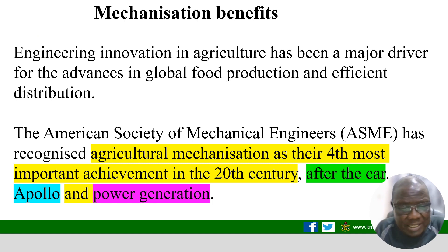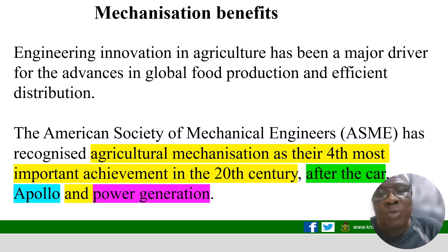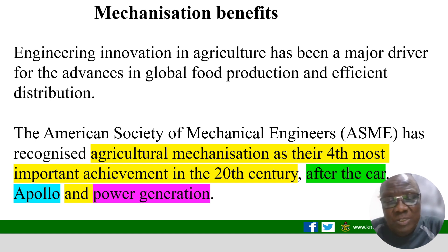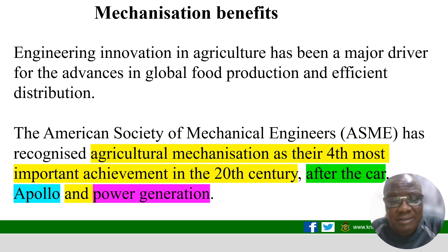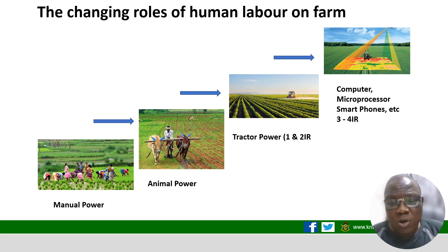The benefits of mechanization are detailed by the American Society for Mechanical Engineers. Engineering innovation in agriculture has been a major driver for advances in global food security and production, especially in developed countries. In the last century, that same society identified the four most important achievements as: the car first, followed by Apollo, then power generation, and then agricultural mechanization. This slide resonates with what has been said earlier about the changing role of human labor on the farm.